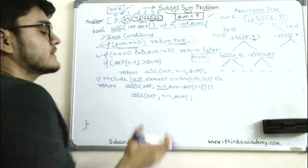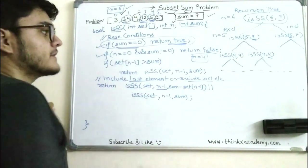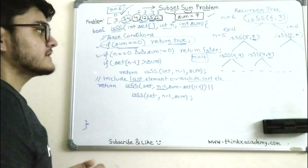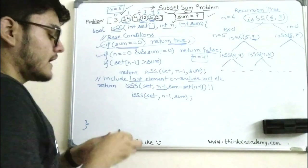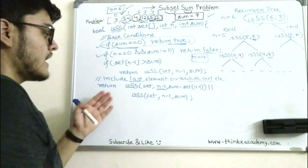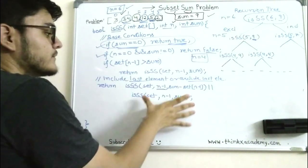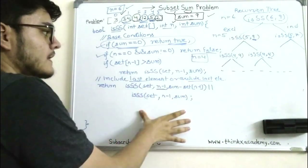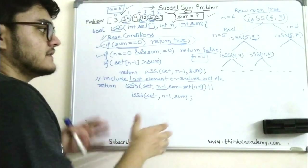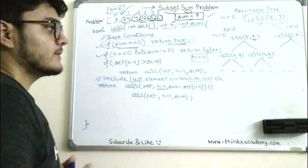Whenever the value of sum equals zero we have found the appropriate subset and return true. That is the Subset Sum problem — solved using recursion by dividing the problem into two sub-problems: include or exclude. The logic was demonstrated earlier using the simple set {1, 2, 3}.